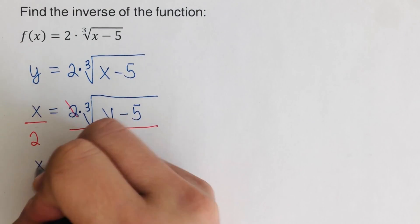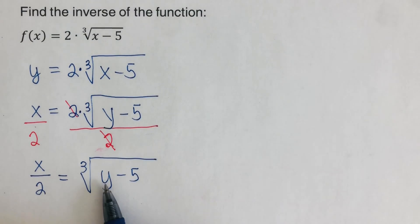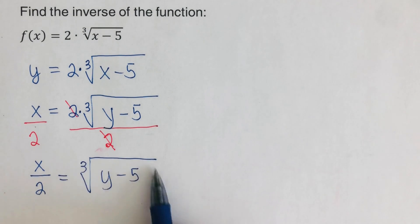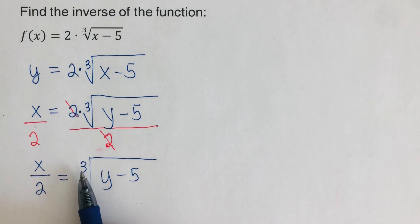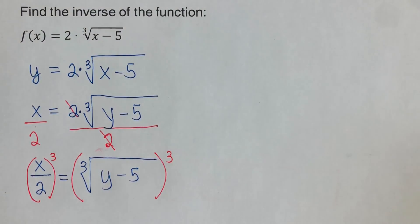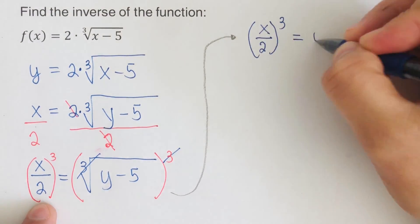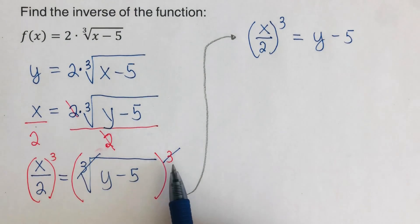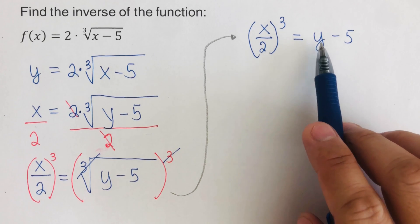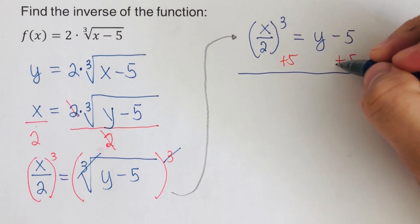We are left with x over 2 is equal to the cube root of y minus 5. Our target is to have y by itself, so to undo the cube root we cube both sides. The cube root and the cubed cancel. Then we add 5 to both sides, giving us: x over 2, cubed, plus 5, equals y.